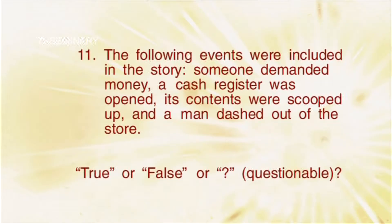Number eleven: the following events were included in the story — someone demanded money, a cash register was opened, its contents were scooped up, and a man dashed out of the store. The answer is question mark. He may not have dashed away — he could have sped away on roller skates or something else. Do we really know how he actually left the store?